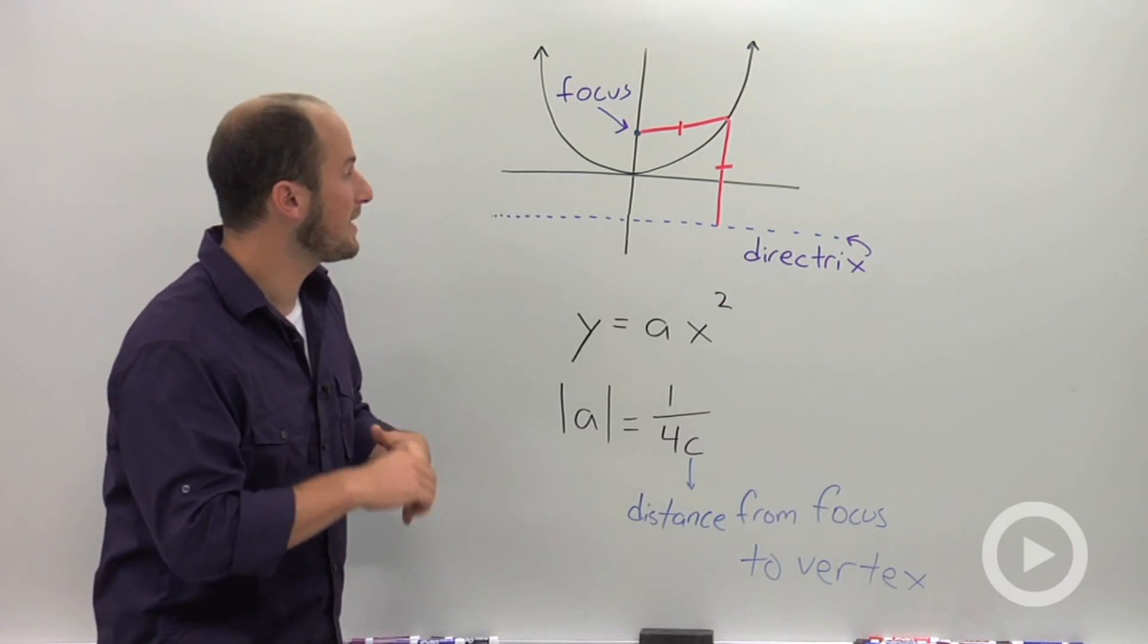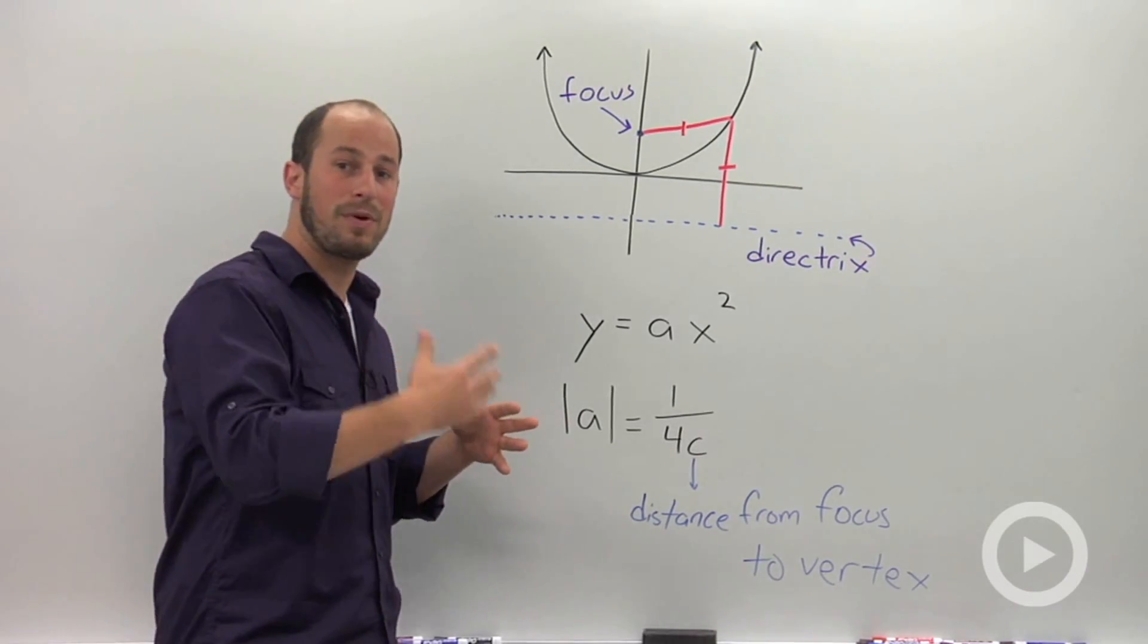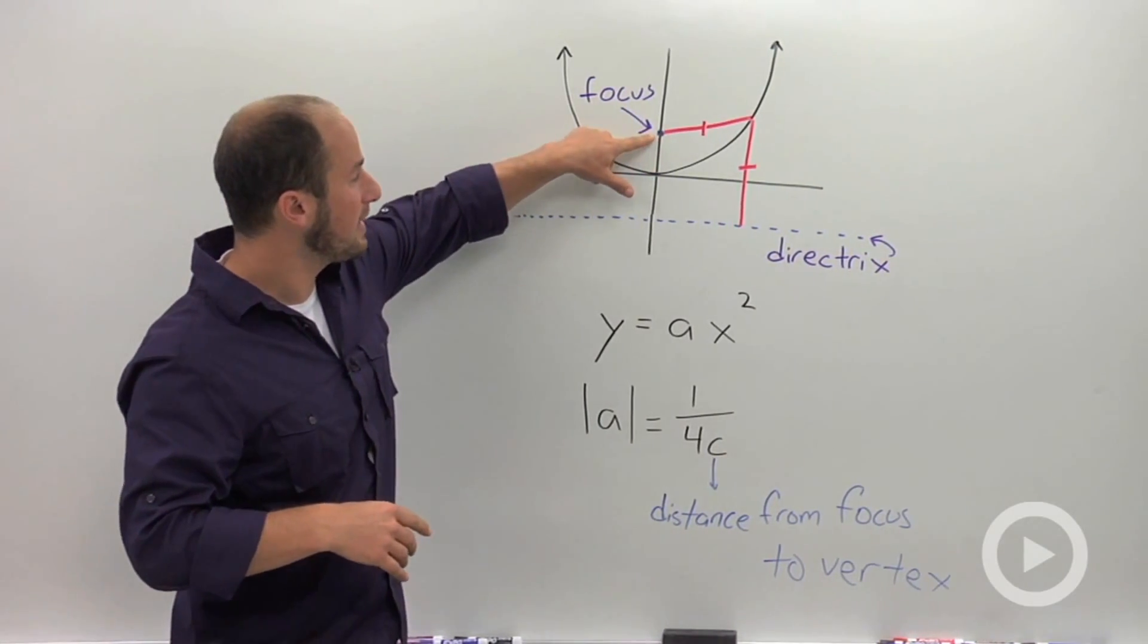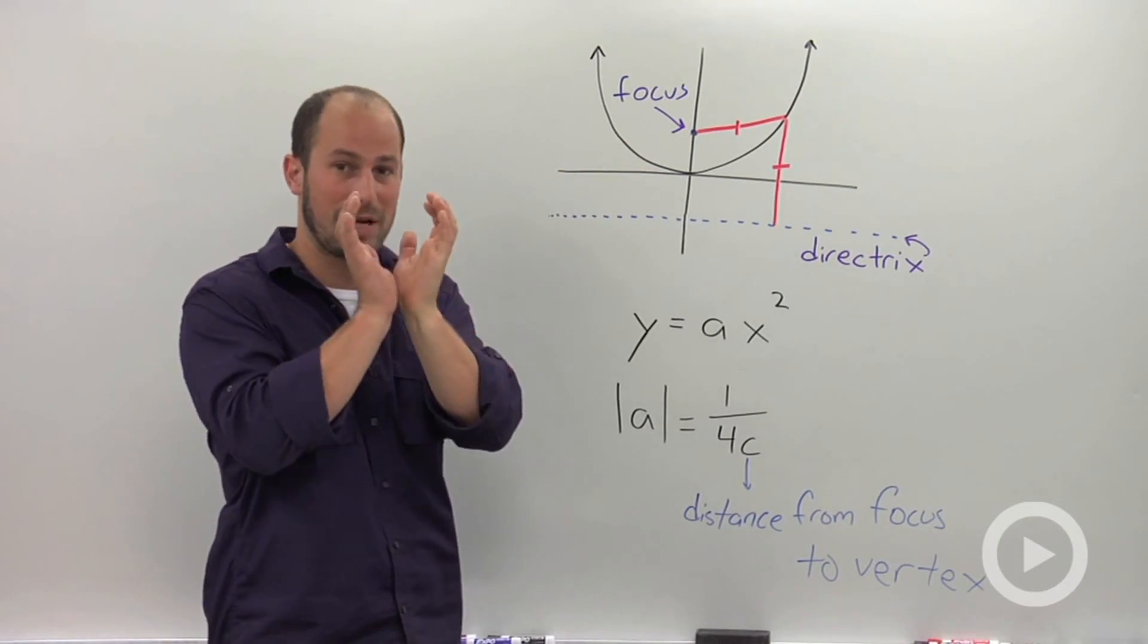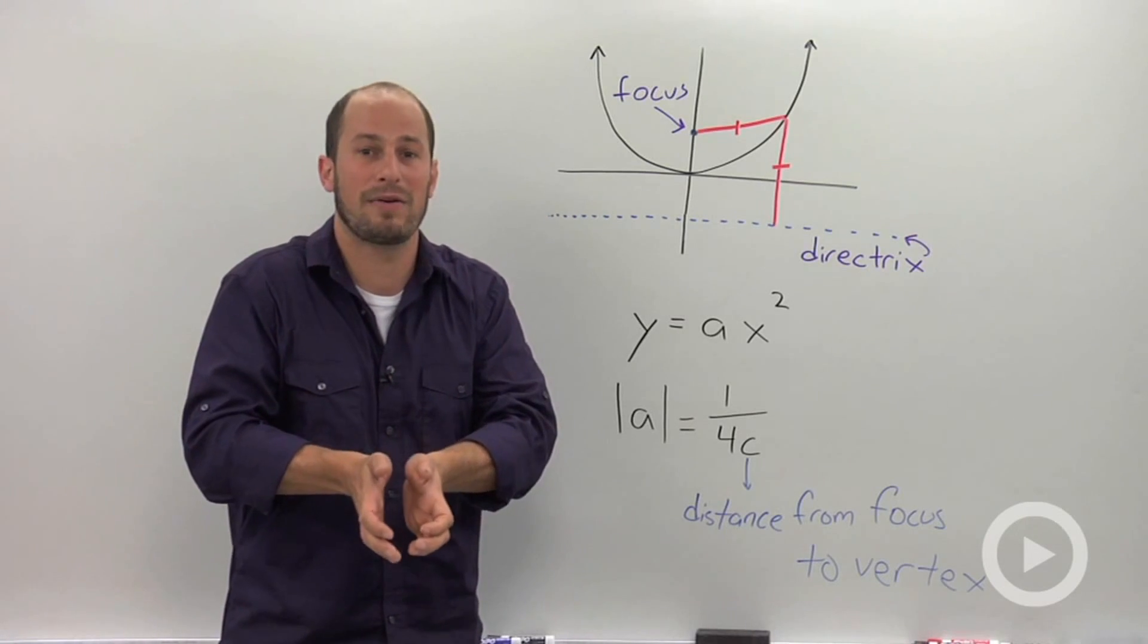And what they are are basically two different things. One's a point, one's a line. The focus is basically a point that is directly above the vertex in an upward-facing parabola. It'd be directly below the vertex in a downward-facing parabola.